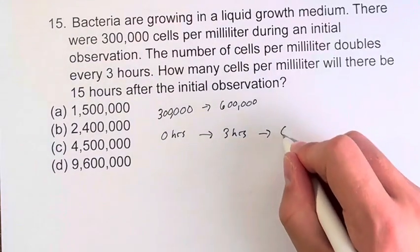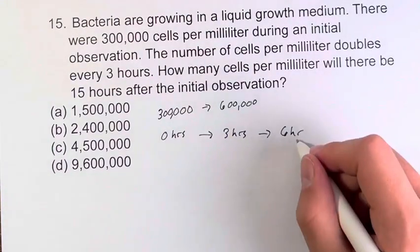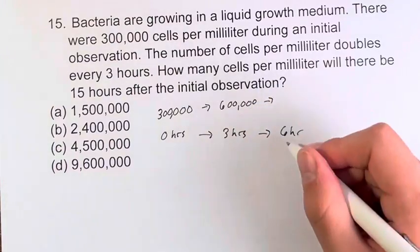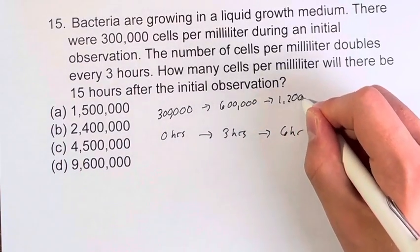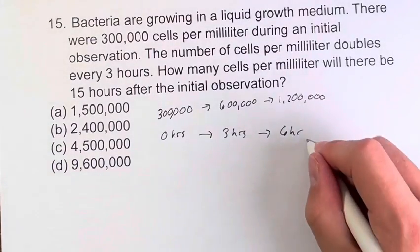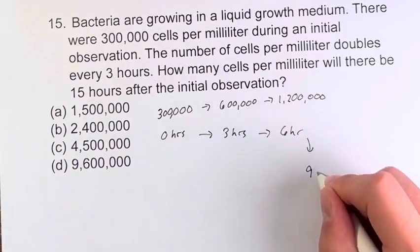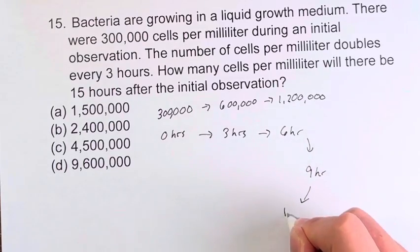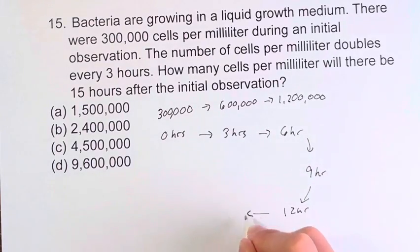Three hours later, it's going to be six hours in. This is going to double again to give us 1,200,000. And then we just have to keep repeating this process. We have nine hours, 12 hours, and 15 hours.